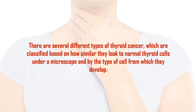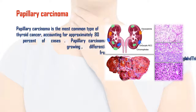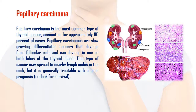Papillary carcinoma is the most common type of thyroid cancer, accounting for approximately 80% of cases. Papillary carcinomas are slow-growing, differentiated cancers that develop from follicular cells and can develop in one or both lobes of the thyroid gland. This type of cancer may spread to nearby lymph nodes in the neck, but it is generally treatable with a good prognosis.